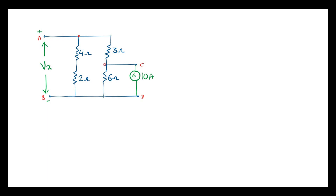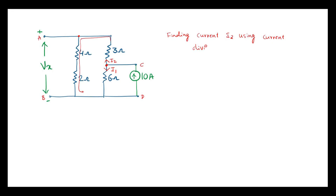The 10 A current is connected to this node. At this node the current will divide — part will flow through this as I1 and part through this as I2. Current I1 flows through the 6 ohm resistor and current I2 flows through the 3 ohm resistor. Since terminal A and B is open, no current flows there, and the entire current will flow through the 4 ohm and 2 ohm resistors.